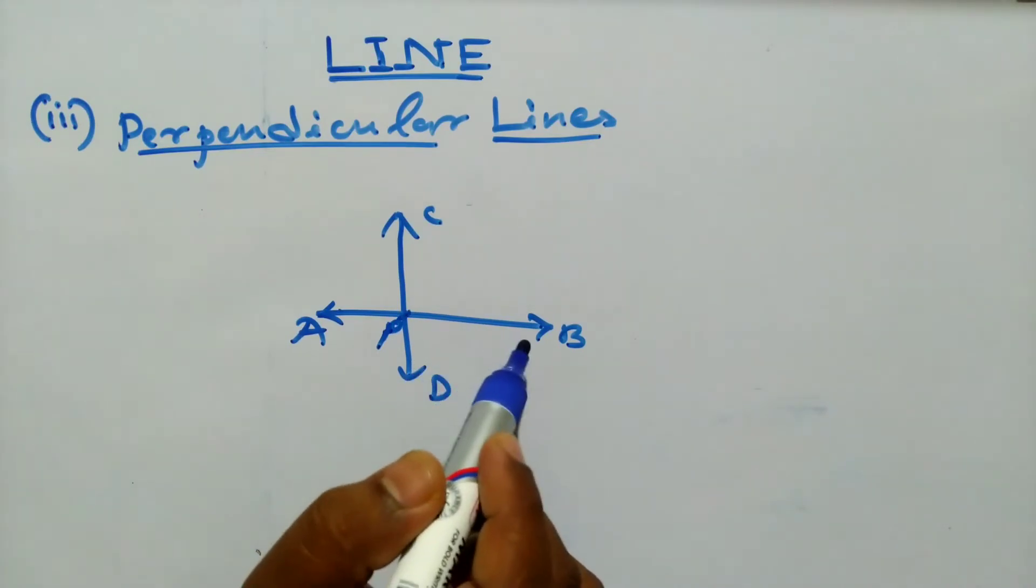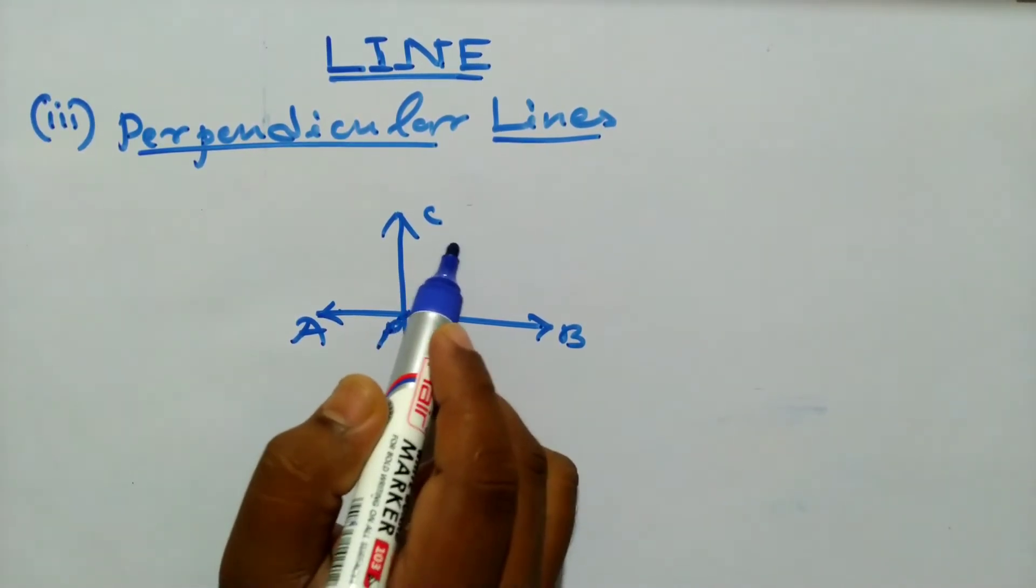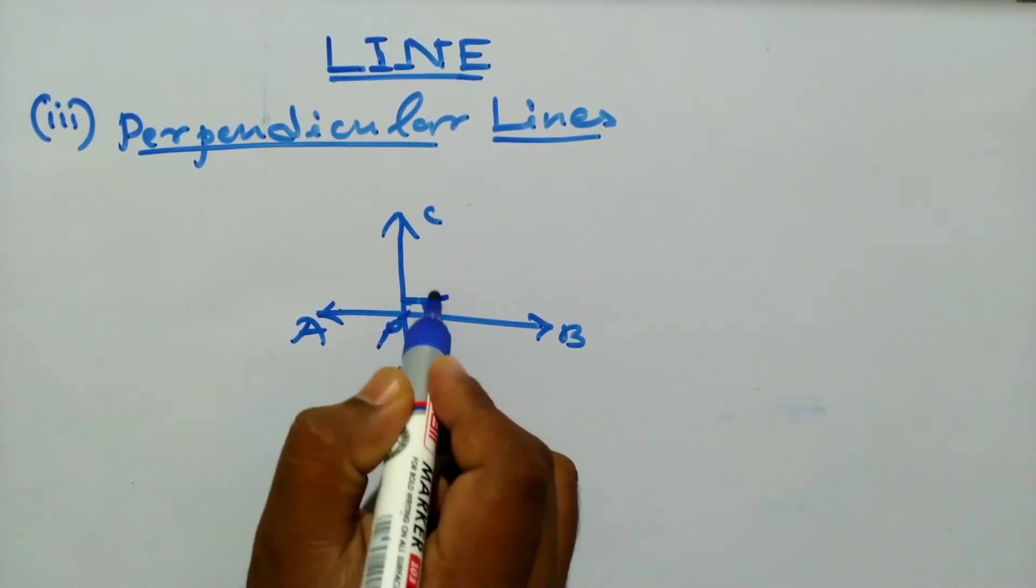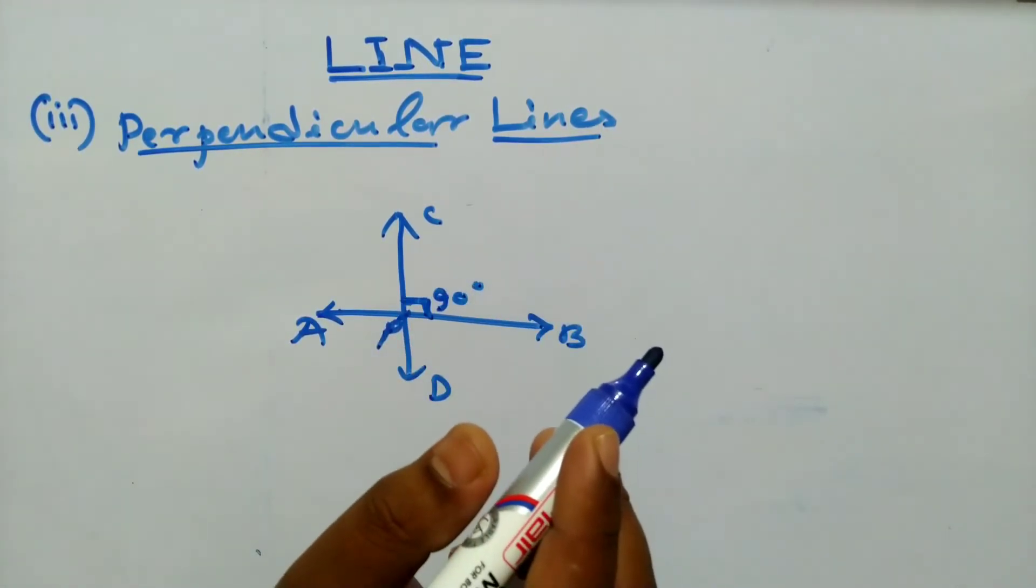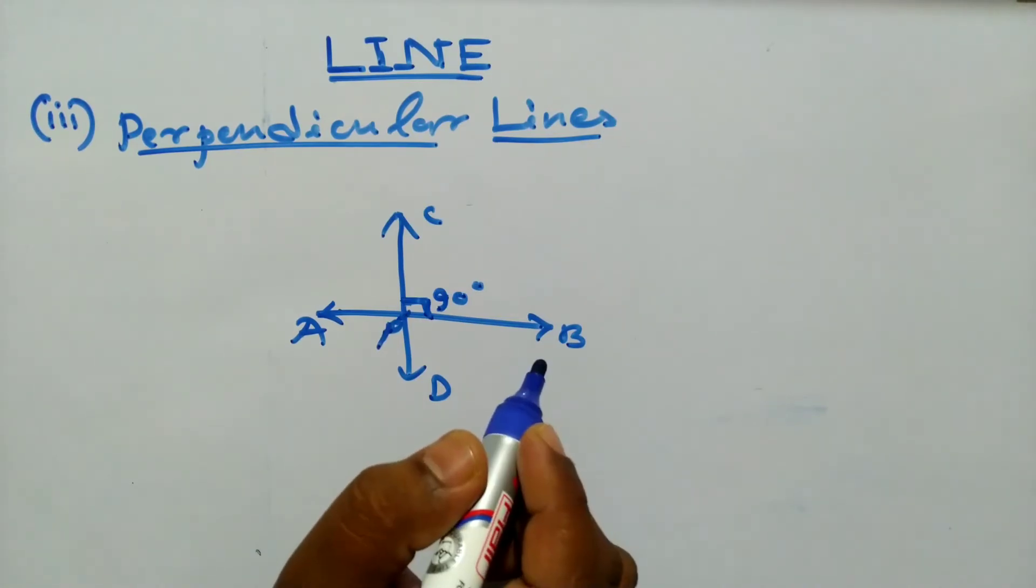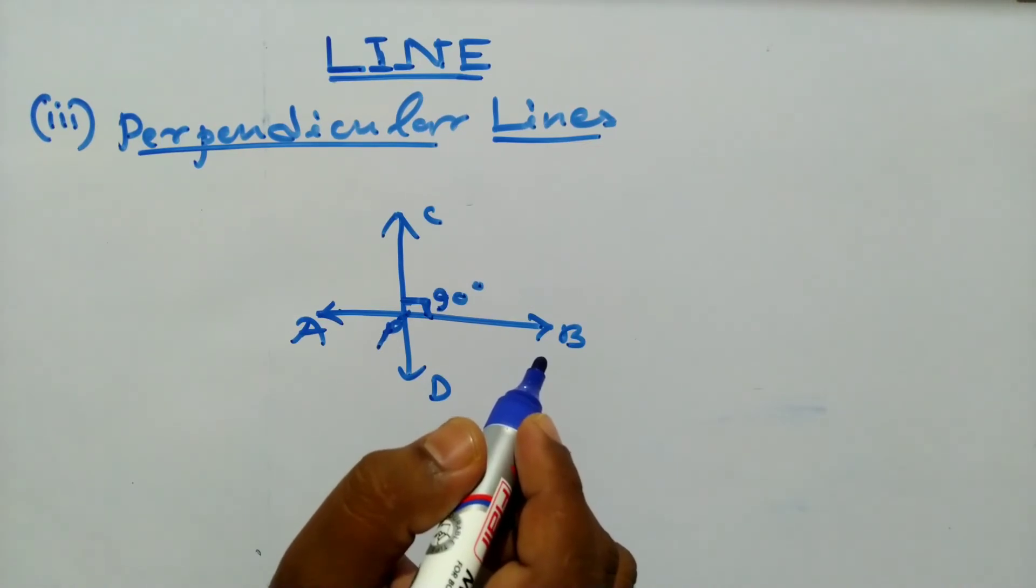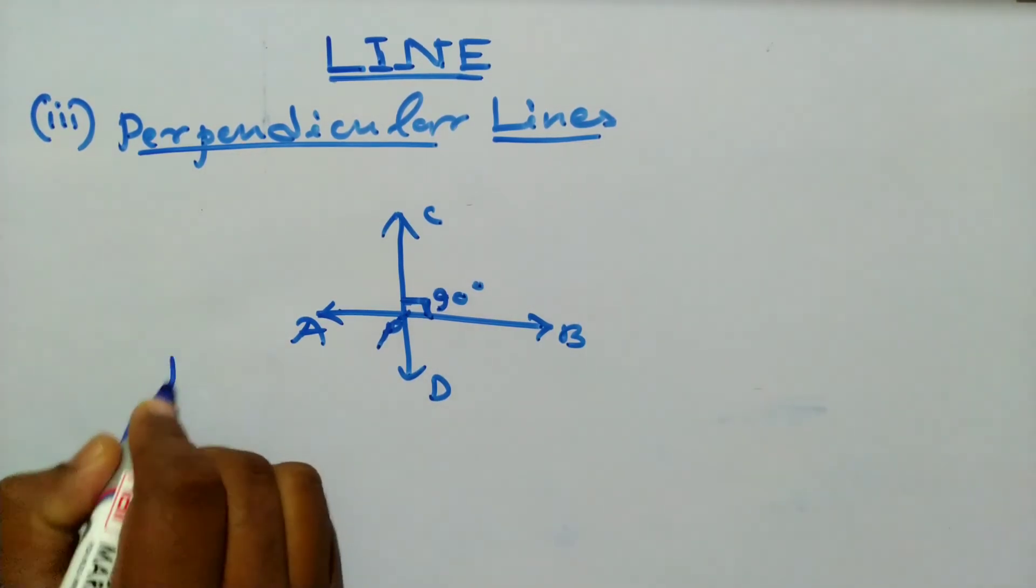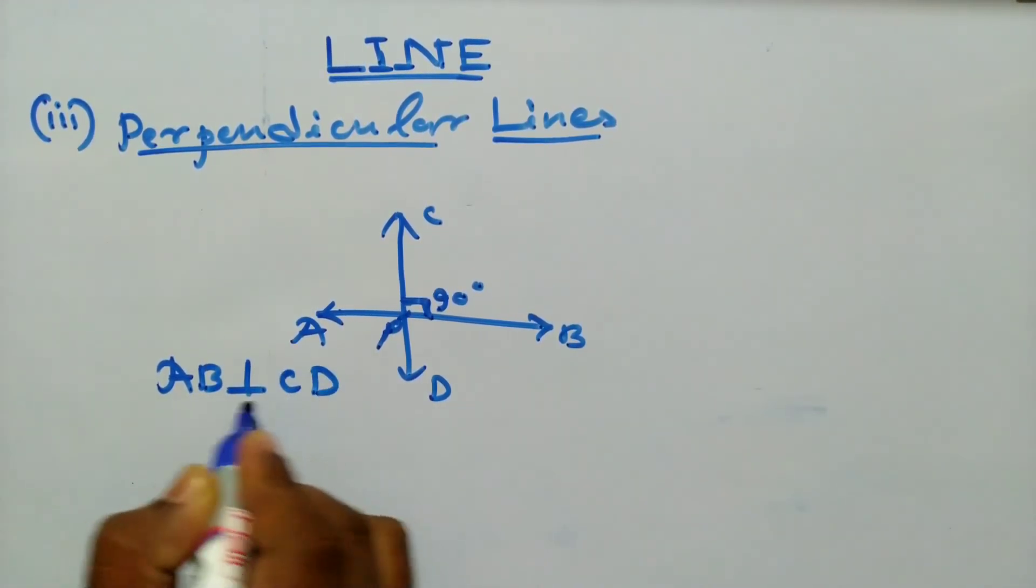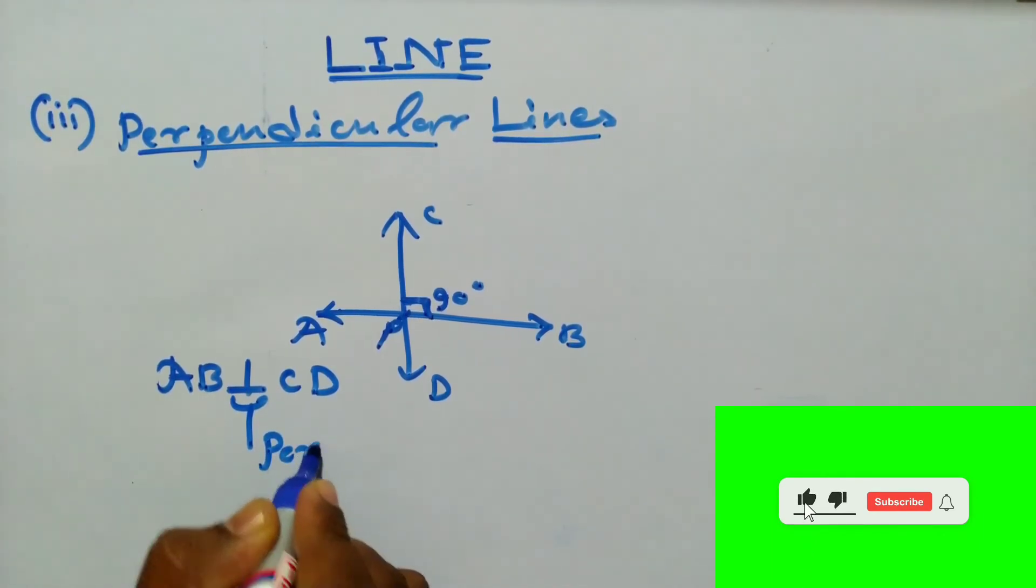When two lines intersect and the angle between them is a right angle—this is called the right angle, 90 degrees—then the lines are said to be perpendicular lines. If the line AB is perpendicular to CD, then we can write AB is perpendicular to CD. This symbol is called the perpendicular symbol.